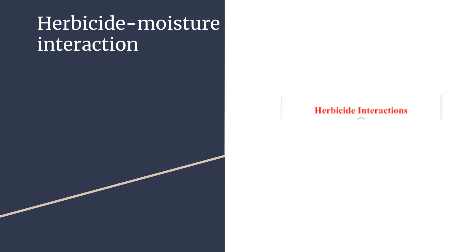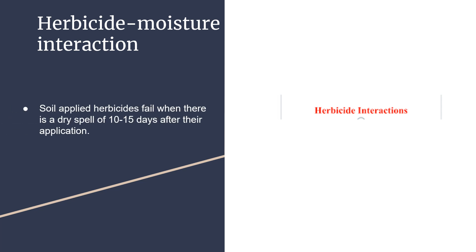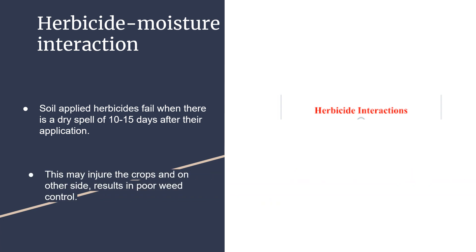Herbicide-Moisture Interaction: Soil-applied herbicides fail when there is a dry spell of 10–15 days after their application. Pre-emergence herbicides may be lost by photodecomposition, volatilization, and wind blowing. While some amount of water is desirable to activate the soil-applied herbicide, excess of it may leach the herbicide to the crop seed, not the root zone.